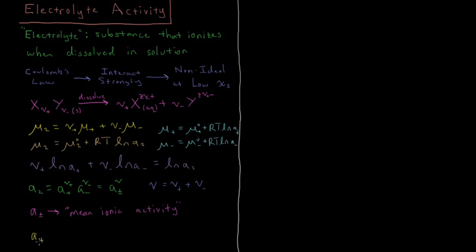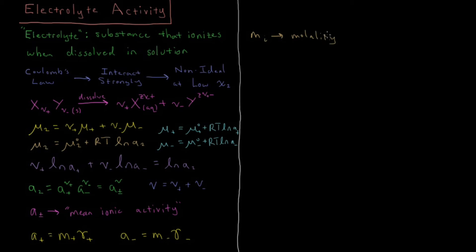We can also define activity coefficients for each ion. The activity of the cation a+ equals its molality m+ times its activity coefficient γ+. Similarly, the activity of the anion a− equals the molality of the anion m− times its activity coefficient γ−, where m_i is the molality and γ_i is the activity coefficient.